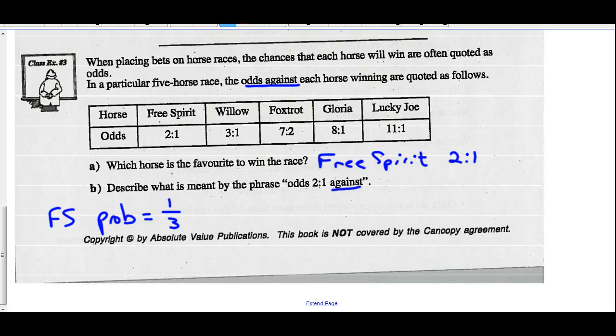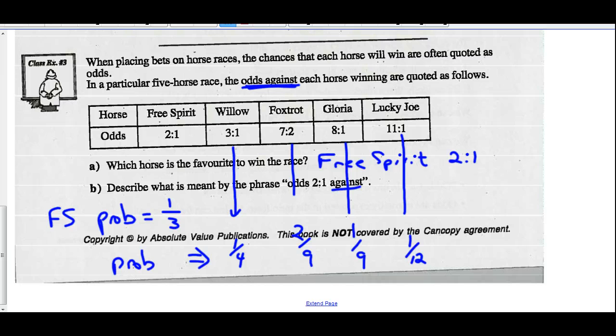If I do the probability for all the rest of them, we would say that Willow would have a 1 in 4 chance. We would say that Foxtrot would have a 2 in 9. We would say that Glory would have a 1 in 9. And Lucky Joe would have a 1 in 12. So these are their probabilities. And it's easier to see when you change the odds against scenario into a probability scenario. So because it's odds against them winning, we're saying the second number is favorable. The first number is their odds against.